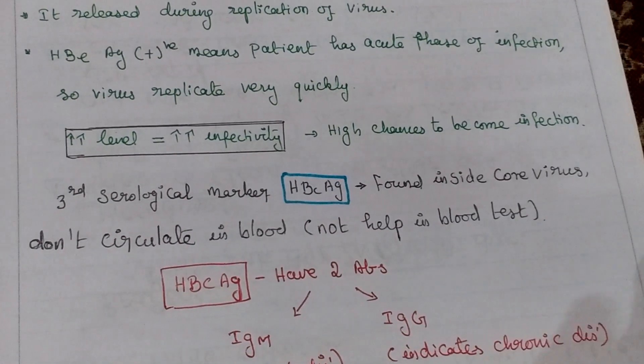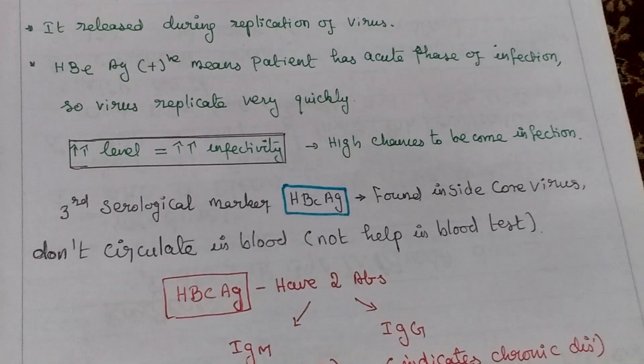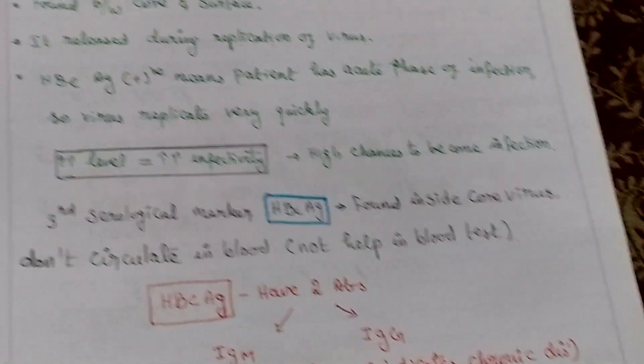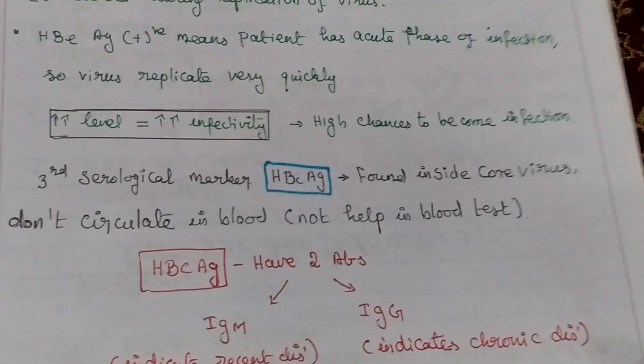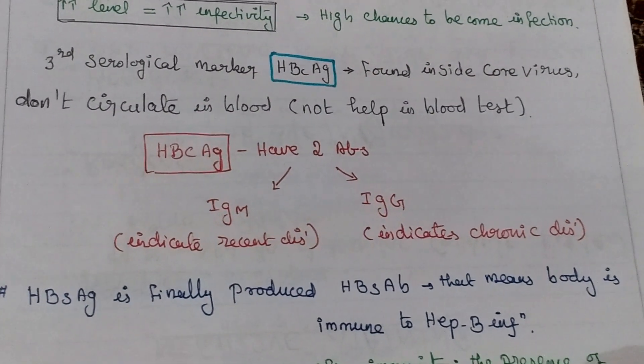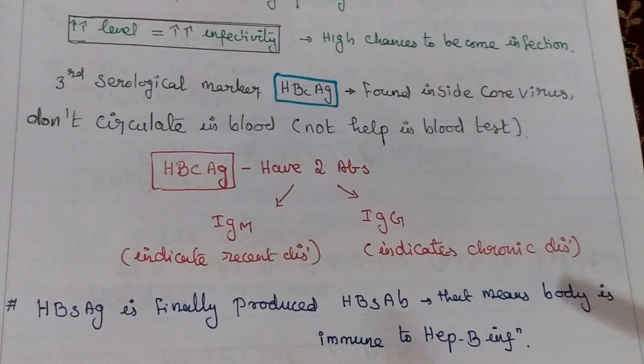Third serological marker is HBcAg found inside the core virus. This one does not circulate in blood, so we can't diagnose by using blood test. This has two types of antibody: IgM and IgG. IgM means recent disease, IgG indicates chronic disease.